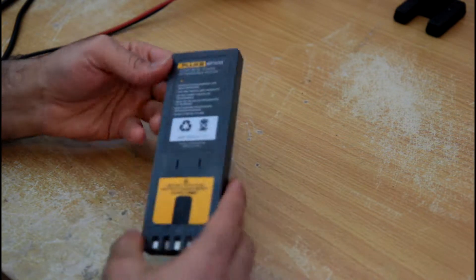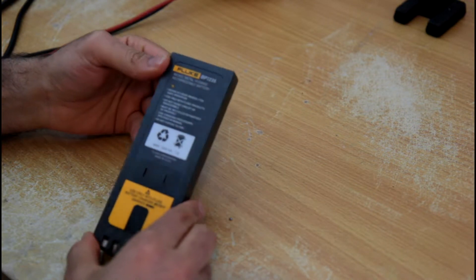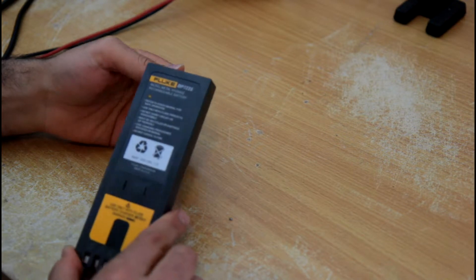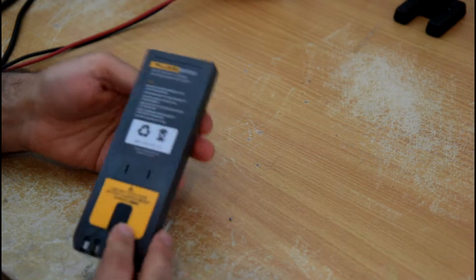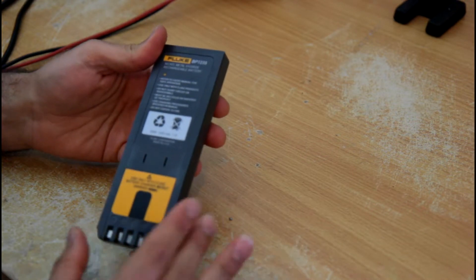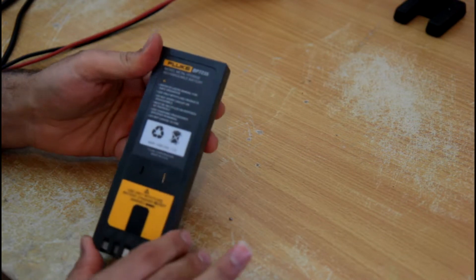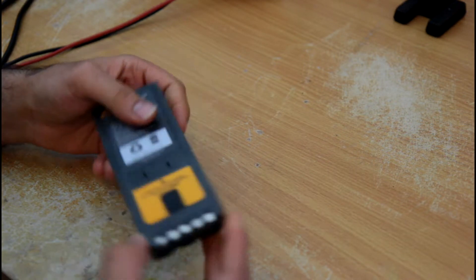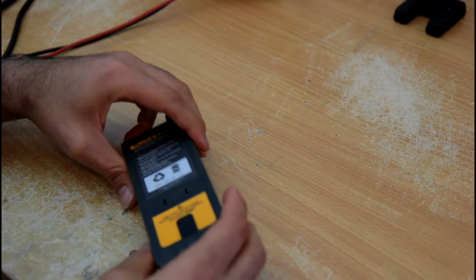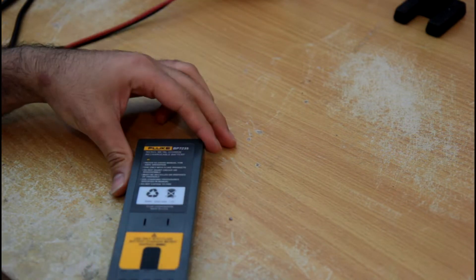For example, this Fluke BP7235 is worth about 500 bucks. It's not that special - it's a 3500 mAh and 7.2V battery. So I will open this up and see what's in it and what makes it special.